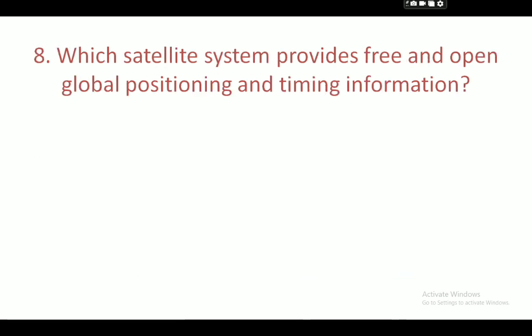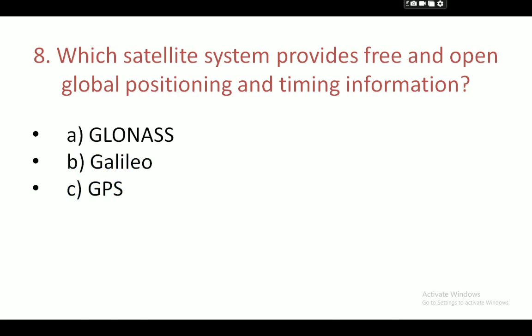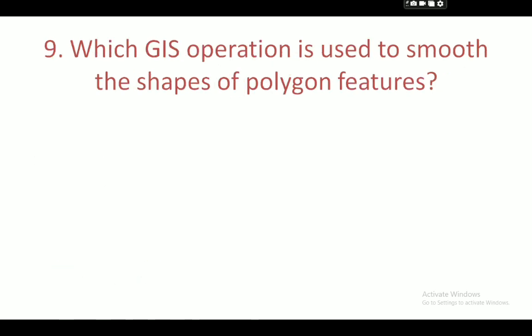Next question: which satellite system provides free and open global positioning and timing information? Your options are: GLONASS, GALILEO, GPS, and BEIDOU. Your correct answer is GPS.